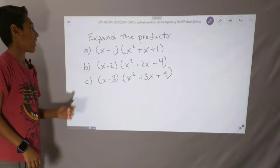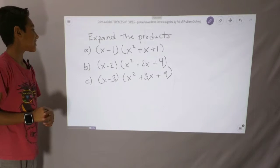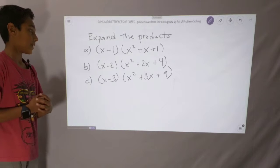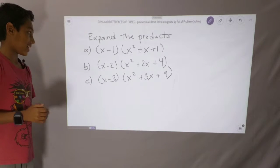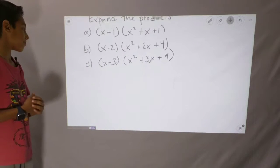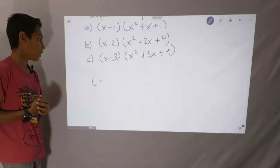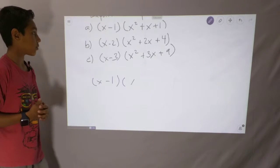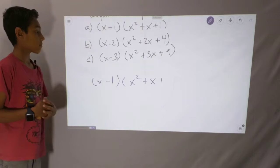So for our first problem, we have: expand the products. Part a: x minus 1, times x squared, plus x, plus 1.